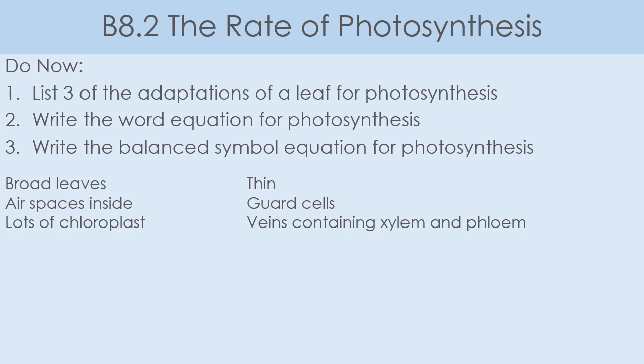We've got lots of chloroplasts. The chloroplasts are the site of photosynthesis. The more chloroplasts we've got, the more chlorophyll within them. The chlorophyll absorbs the light required for photosynthesis. And finally, we've got veins containing the xylem and the phloem. The xylem carries water from the roots up through the stem to the leaves through transpiration, giving us the water for photosynthesis. The phloem carries the glucose and other nutrients either to or away from the cells in the leaf.